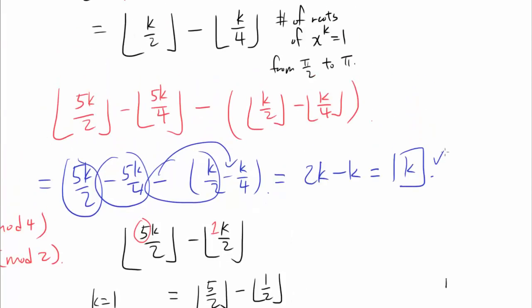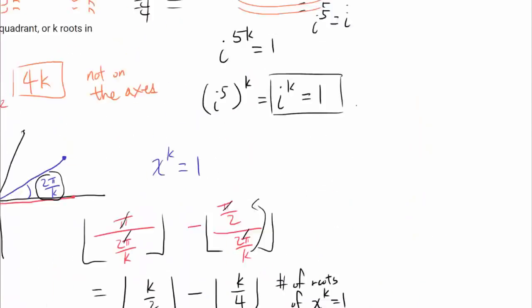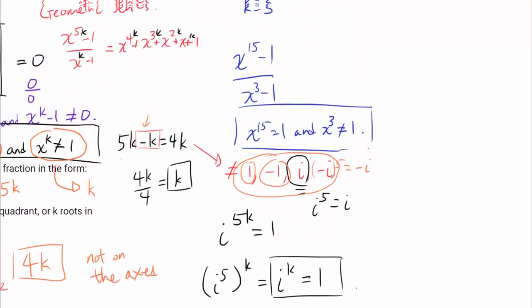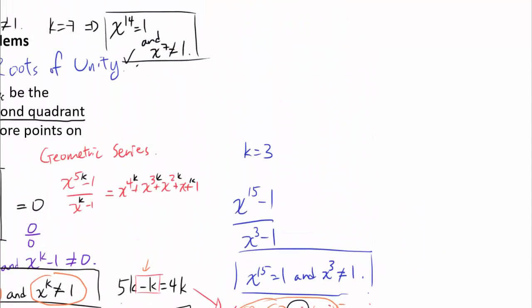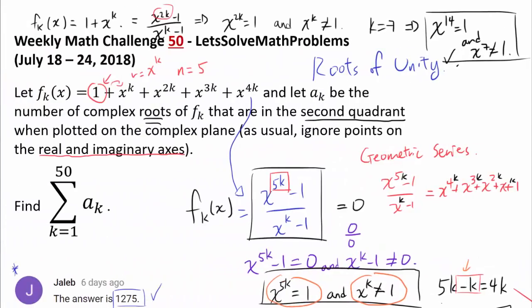So the number of roots in the second quadrant is k. And from here it's not too hard to show every quadrant has k roots — our 5k was very special after all. So a sub k, the number of roots in the second quadrant, is simply k. We are summing integers from 1 to 50, also known as 25 times 51, which equals 1275.